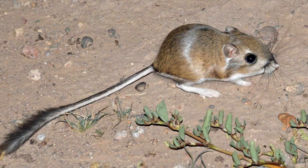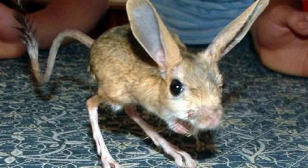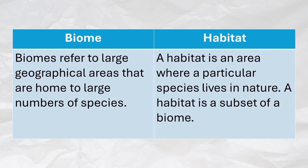Rodents inhabiting deserts around the world have a number of adaptations for hot, dry climates, including high-efficiency kidneys that allow very little water to be lost during urination. For plants and animals, biomes refer to the large geographical area that they call home. In contrast, a habitat is the area in which a particular species lives in nature — a habitat is a subset of a biome.